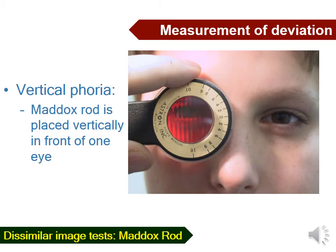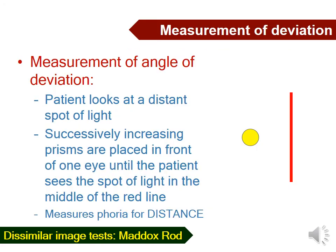In vertical phoria testing, the Maddox rod is placed vertically in front of one eye. If the patient has no vertical imbalance, the patient will see the spot of light in the middle of the red line. If the patient has hyper- or hypophoria, the patient will see the spot of light above or below the red line. If the patient has horizontal or vertical phorias, successively increasing prisms are placed in front of one eye until the patient sees the spot of light in the middle of the red line.